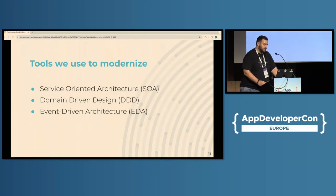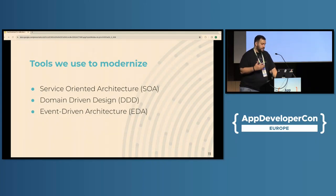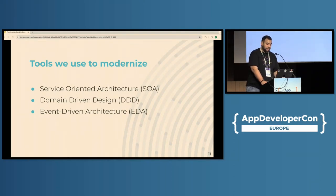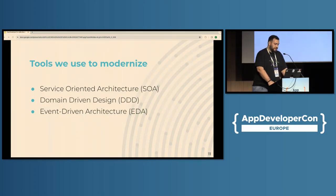As we start to modernize the architecture, we have a few architectural tools. First, service-oriented architectures: the system is divided into services, each performing a specific function, and those services communicate with each other using well-defined interfaces. SOA is highly scalable and flexible, and a very good choice for large, complicated projects. However, it is more complex to implement and maintain. Microservices are considered a variant of service-oriented architectures.